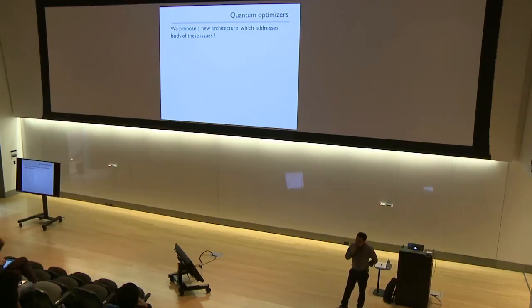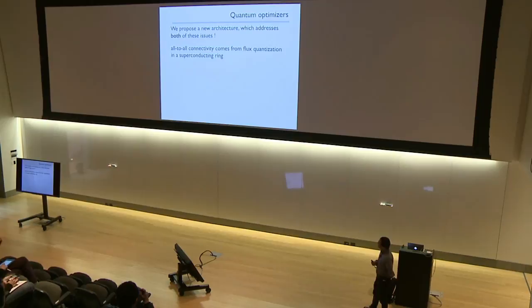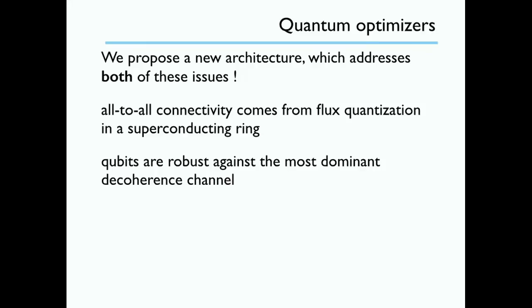I am going to propose a new architecture which I claim addresses both of these issues. We get all-to-all coupling, and this all-to-all coupling is achieved simply by imposing flux quantization in a superconducting ring. I am also going to show that these qubits are robust against the most dominant decoherence channel. So both challenges — all-to-all connectivity and decoherence — are not as bad if we do quantum annealing using the architecture I am going to propose.